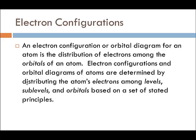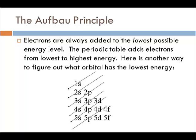An electron configuration or orbital diagram for an atom is a distribution of electrons among the orbitals of an atom. They are determined by distributing the atom's electrons among levels, sublevels, and orbitals. The levels are the broadest, and we get more specific as we go to sublevels and orbitals — that's where the electrons sit around the nucleus in the electron cloud.